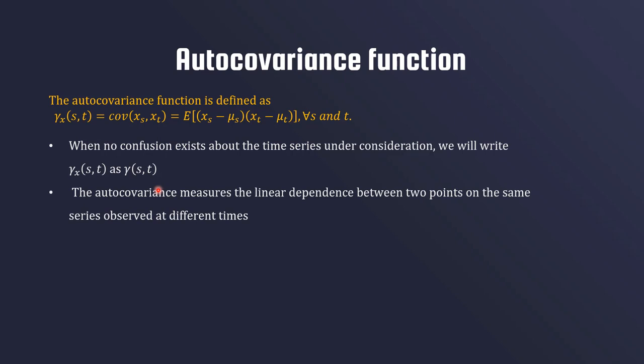The auto covariance measures the linear dependence between two points on the same series observed at different times. Covariance between two variables measures the linear relationship between them, so covariance of X_s and X_t measures the linear relationship of the time series at these two time points.